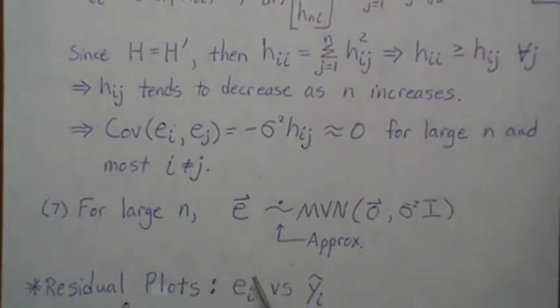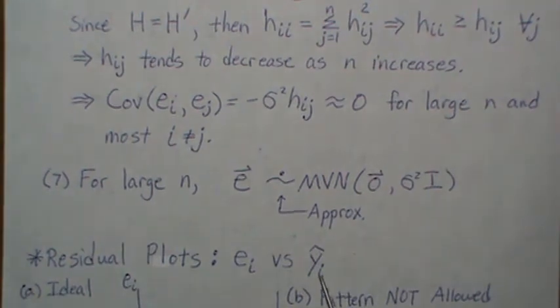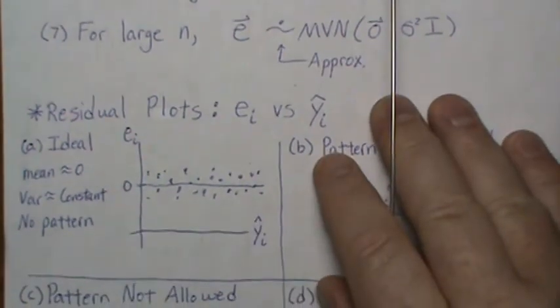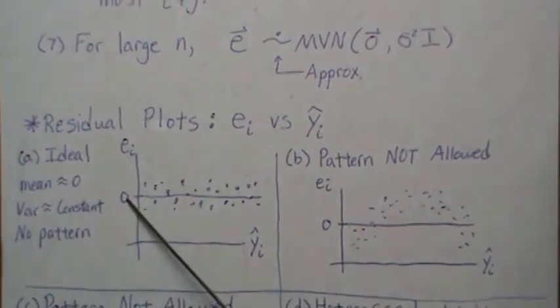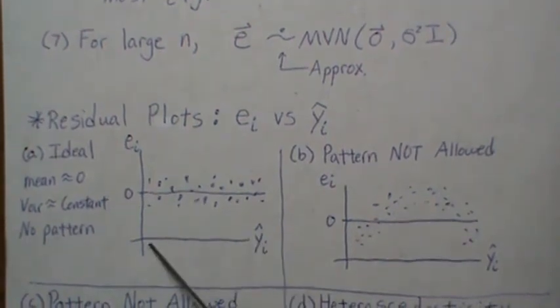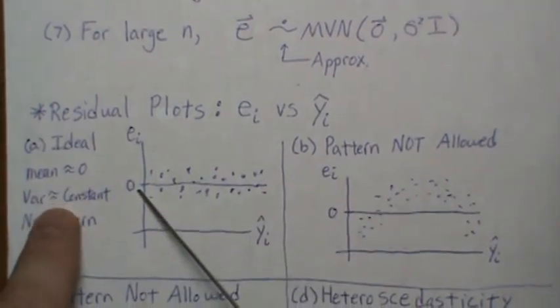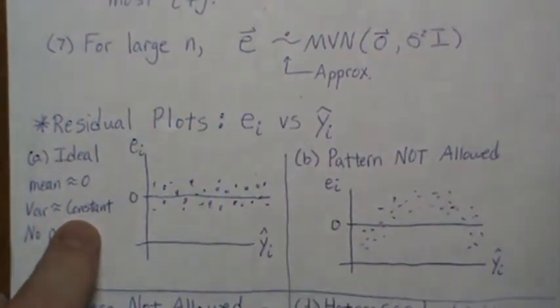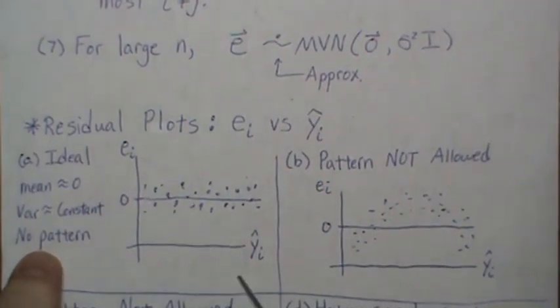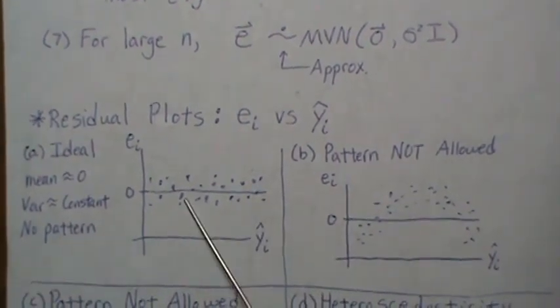So now to investigate the residuals visually, what we do is we plot what's called a residual plot. We plot the residuals versus the fitted value. So this is the ideal case. This is the fitted value and this is the residual. Notice that the mean is roughly zero, it fluctuates around zero. It's a constant variance, and there's no pattern, meaning it looks random, they look independent from one another. So this is the ideal case.